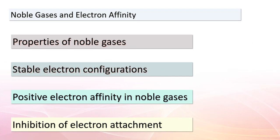Noble gases are renowned for their stability thanks to their complete electron configurations — they boast full electron shells, which make them less likely to interact with other elements. The positive electron affinity seen in noble gases like Ar indicates that these atoms aren't very receptive to gaining additional electrons. An electron won't easily attach itself to an Ar atom, ultimately impacting the formation of an Ar⁻ ion. Electron affinity varies based on elements and their electron configurations — it's not a universal trait.